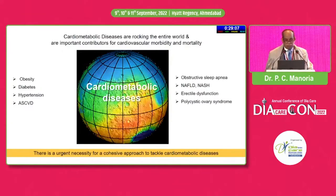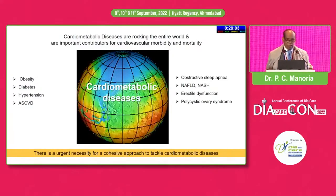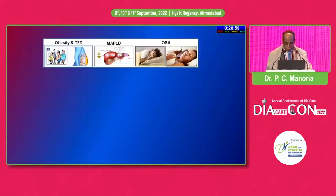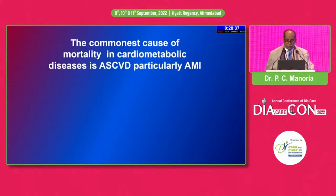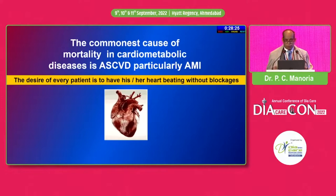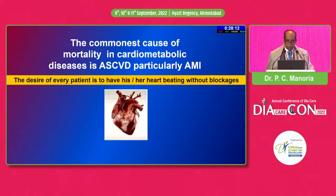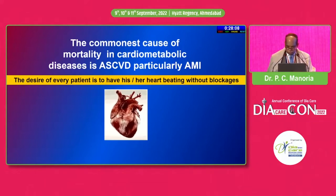All of us know cardiometabolic diseases are rocking the entire world and are important contributors to cardiovascular morbidity and mortality. The peculiar feature of cardiometabolic diseases is they often conglomerate in the same patient — it is not uncommon to have obesity, diabetes, NAFLD, OSA, and other diseases in the same patient. The most important thing is that the commonest cause of mortality in cardiometabolic diseases is ASCVD, particularly acute myocardial infarction. Every day we see scores of patients asking: do I have blockages in my coronary artery?